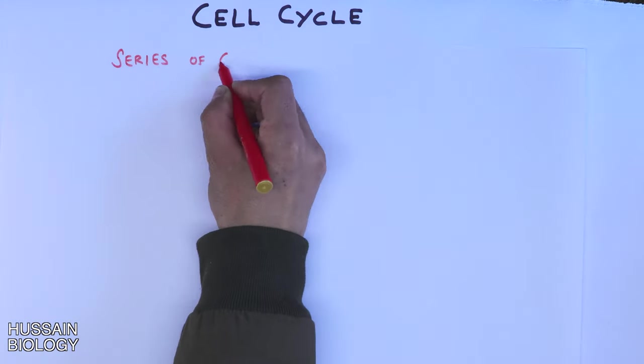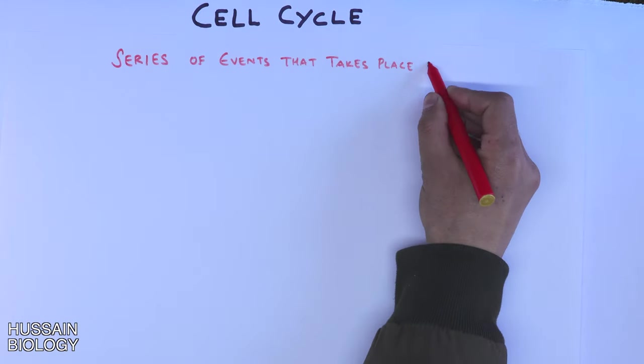In this video we'll be discussing the overview of cell cycle, and then we will start the series of cell cycle videos in detail. In the cell cycle, we have a series of events that take place in a cell where the cell divides into two daughter cells.